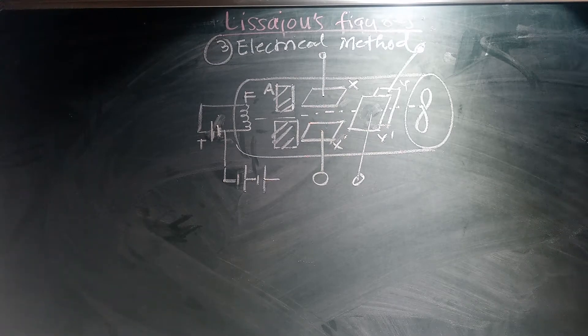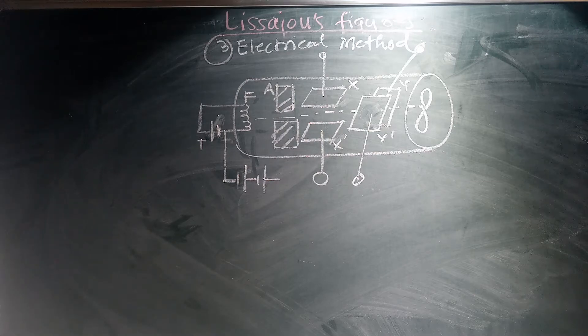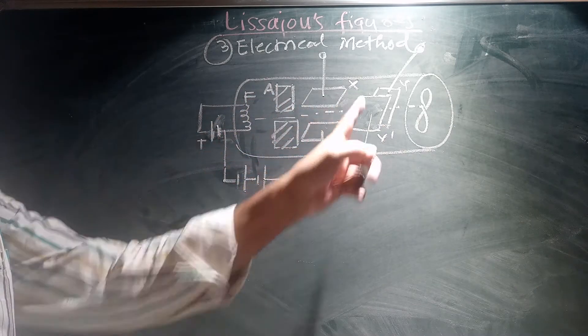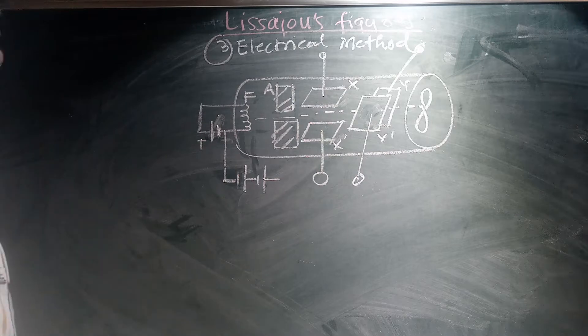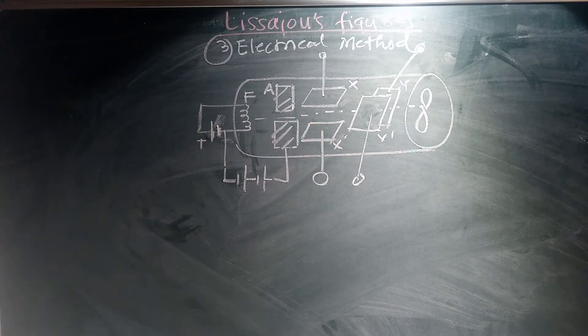Now this is the third method for obtaining Lissajous figures, that is the electrical method. This is the CRT, that is cathode ray tube, which is evacuated, having filament EF and this is anode. X and Y are the horizontal and vertical plates.